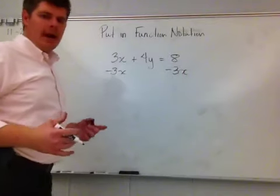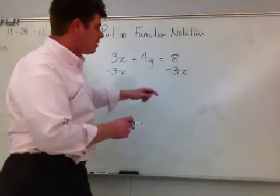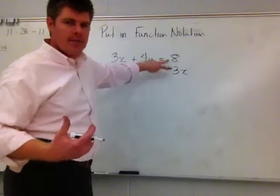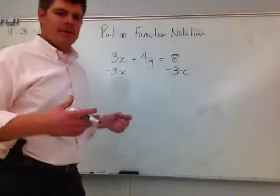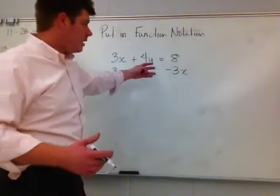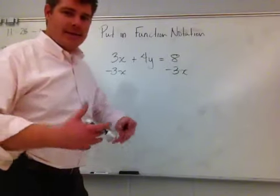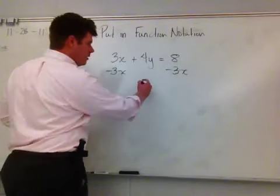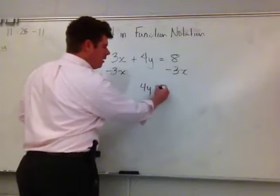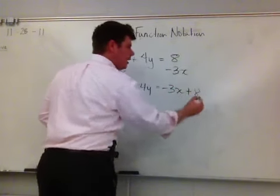Now the thing to be careful about here is that this is an 8, and this is a negative 3x. So these terms are not considered like terms. And the only way we can ever simplify expressions is if they are like terms. So in this case, they are not. So I just have to simply write it as that expression. So what I'm left with is 4y is equivalent to negative 3x plus 8.